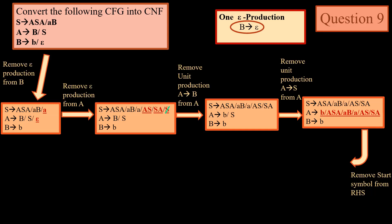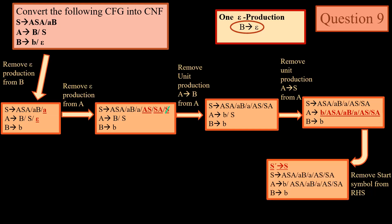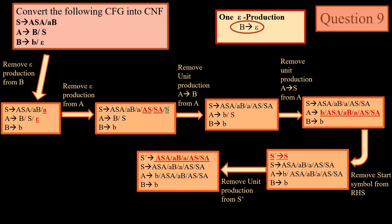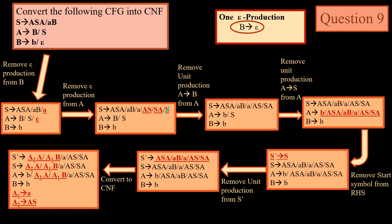Now we remove the start symbol from the right side — this is a condition that needs to be fulfilled. To remove the start symbol from the right side, we augment the grammar: S′ → S. Since this is a unit production, we remove it by putting all the values corresponding to capital S in place of capital S for the production S′ → S. Now we convert this into Chomsky Normal Form. This is the final output.